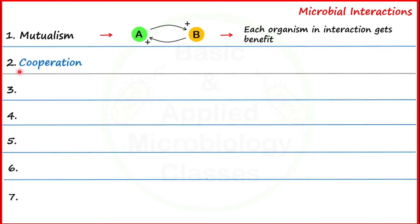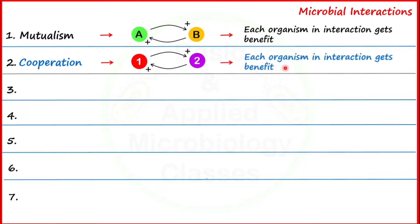The second type of microbial interaction is cooperation. Again considering two different microbial populations, one and two — during cooperation, one gives benefit to two and two also gives benefit to one. So each organism in cooperation gets benefit. You may be thinking that mutualism and cooperation are the same, since in both cases the partners get benefit from each other. So the question is: how are these interactions different from each other?